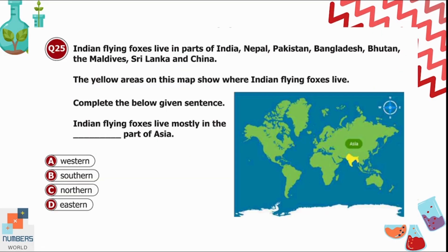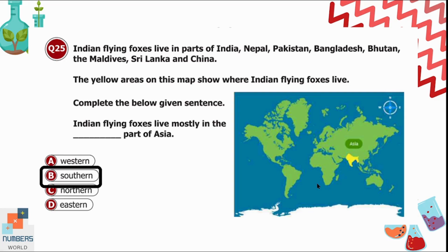Question 25: Indian flying foxes live in parts of India, Nepal, Pakistan, Bangladesh, Bhutan, Maldives, Sri Lanka, and China. A map shows yellow areas where they live. Complete the sentence: Indian flying foxes live mostly in the dash part of Asia. Using directional reference with Asia at the center, the yellow areas are towards the south, so option B — southern part of Asia — is correct.